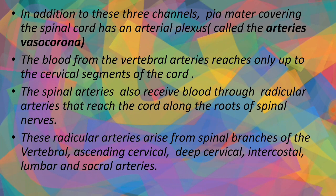The blood supply from the vertebral arteries covers only the cervical segments of the cord. The spinal arteries also receive blood through the radicular arteries, which reach the cord along the roots of the spinal nerves. These radicular arteries arise from spinal branches of the vertebral, ascending cervical, deep cervical, intercostal, lumbar, and sacral arteries.